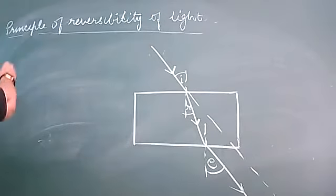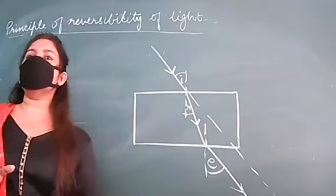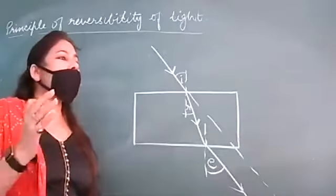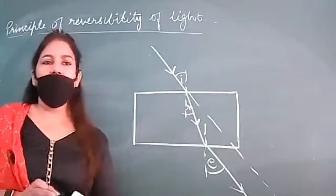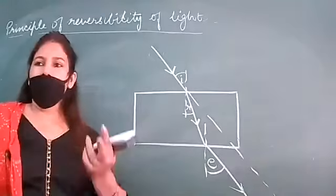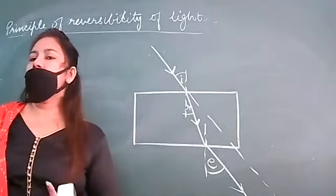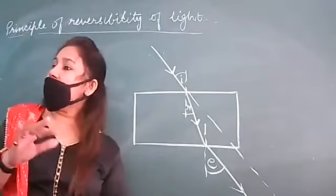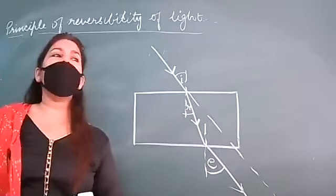The principle of reversibility of light states that if the path of a ray of light is blocked after any number of reflections or refractions — agar hum kissi bhi reflections ya refractions ke baad light ke path ko block kar dein, kaisi bhi block kar dein, suppose we keep a plane mirror at right angles to it — then it will go back along the same path. The ray will retrace its path. This is called the principle of reversibility of light, and this will happen after any number of reflections or refractions.